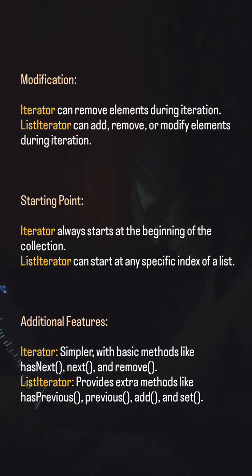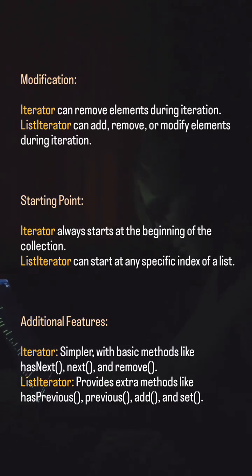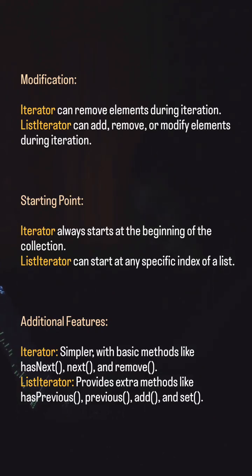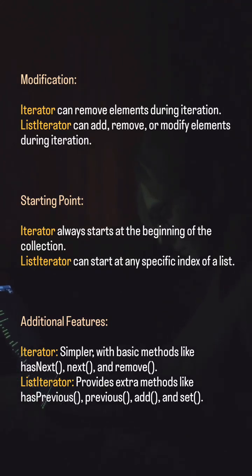Modification: iterator can remove elements during iteration, while list iterator can add, remove, or modify elements during iteration. Starting point: iterator always starts at the beginning of the collection, whereas list iterator can start at any specific index of a list.